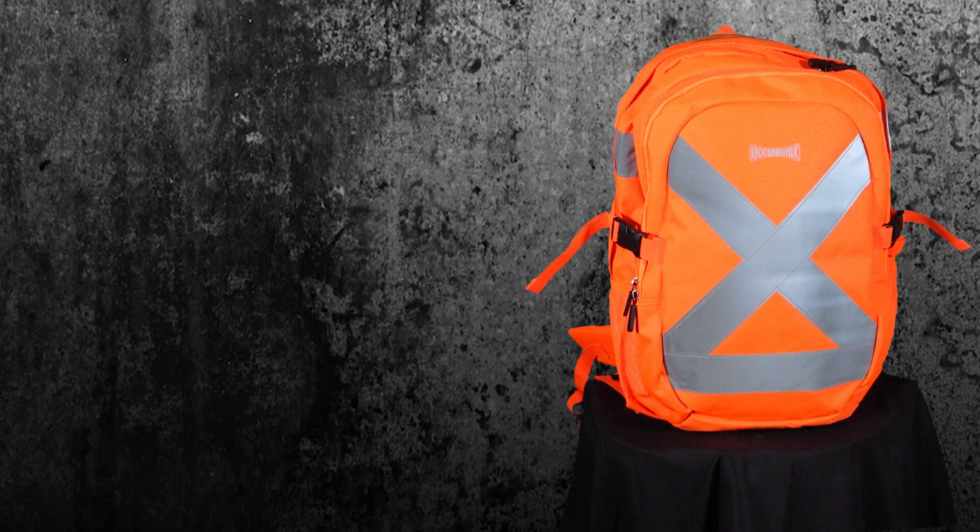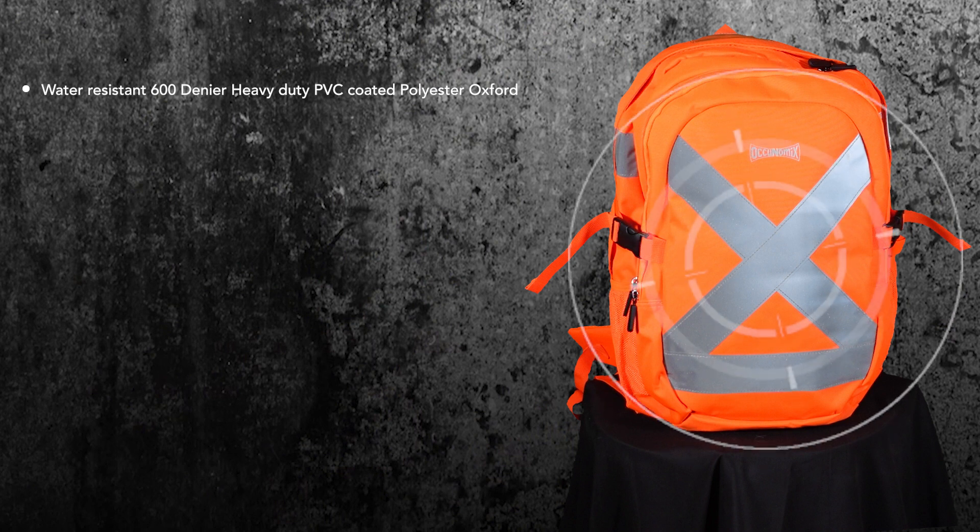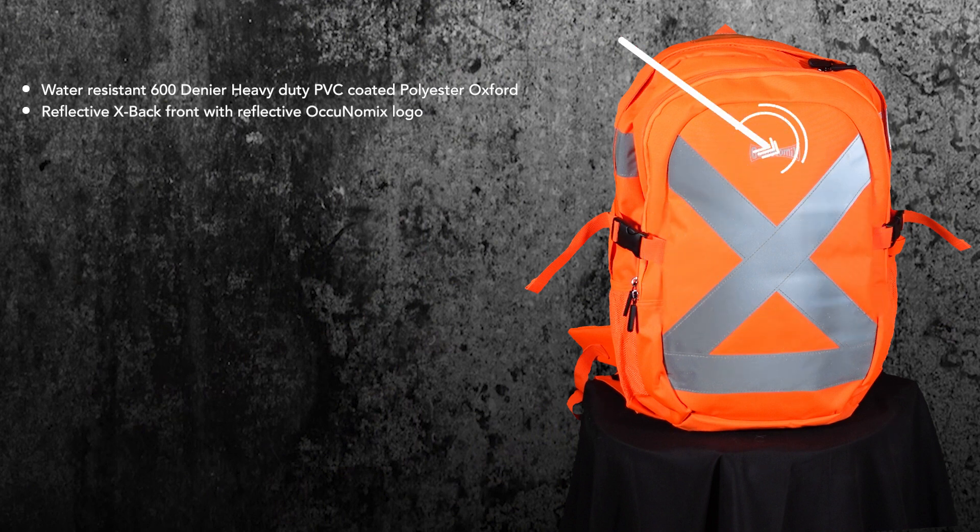And wait, that's not all. While having these convenient breakaway features, the backpack also comes with great features for practical use on the job site like water-resistant 600 denier heavy-duty PVC coated polyester. Reflective X-back front with reflective Ocunomics logo.